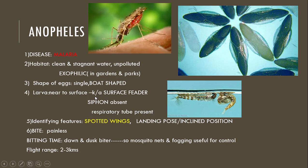The siphon is absent and it breathes through a respiratory tube — this is the most important feature of the larvae. Identifying features of the adult mosquito: it contains spotted wings. As we can see in this picture, spots on the wings are present, and it lies in a landing position or inclined position. The bite is painless. The biting time of Anopheles mosquito is evening and morning — a dawn and dusk biter. Mosquito nets and fogging are useful for control of Anopheles mosquitoes. The flight range is 2 to 3 km.